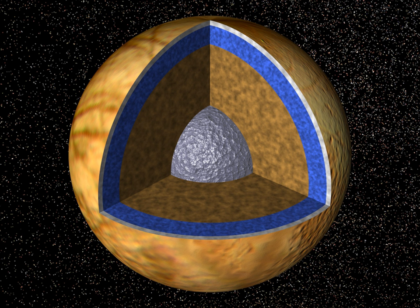An ocean planet, ocean world, water world, aquaplanet, or panthalassic planet is a type of terrestrial planet that contains a substantial amount of water either at its surface or subsurface. The term 'ocean world' is also used sometimes for astronomical bodies with an ocean composed of a different fluid, such as lava or ammonia.